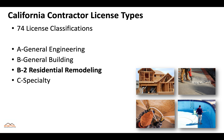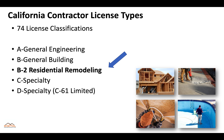You also have the C Specialty Classification and the D Specialty Classification, also known as the C61 Limited Specialty. The B2 Residential Remodeling is the most recent contractor license classification in California.